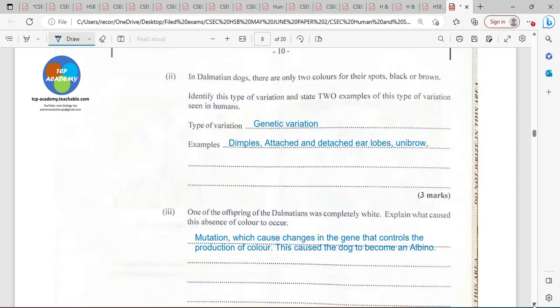In Dalmatian dogs, there are only two colors for their spots, black or brown. Black and brown, it's absolute. It's a discontinuous variation. Now, if it is a discontinuous variation, then it's going to be a genetic variation. So black and brown is going to be a genetic variation.